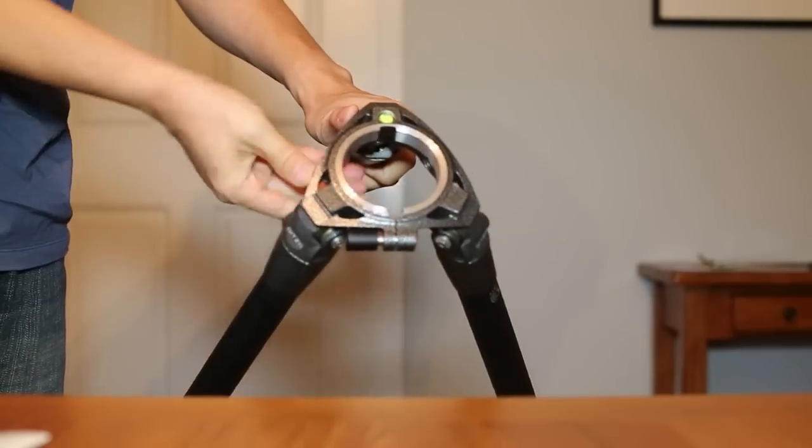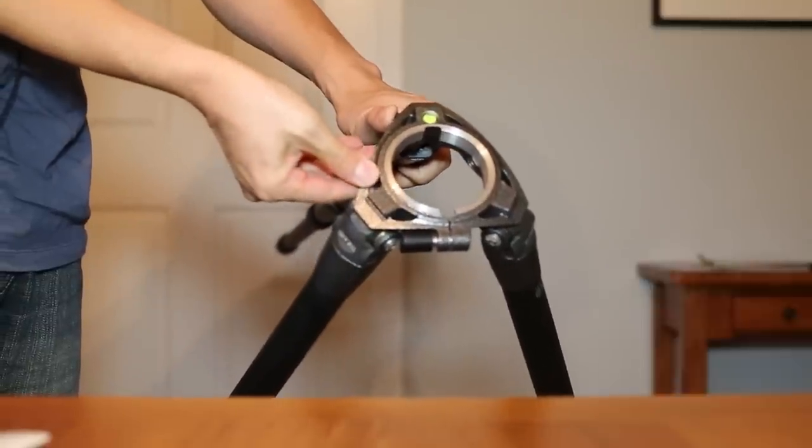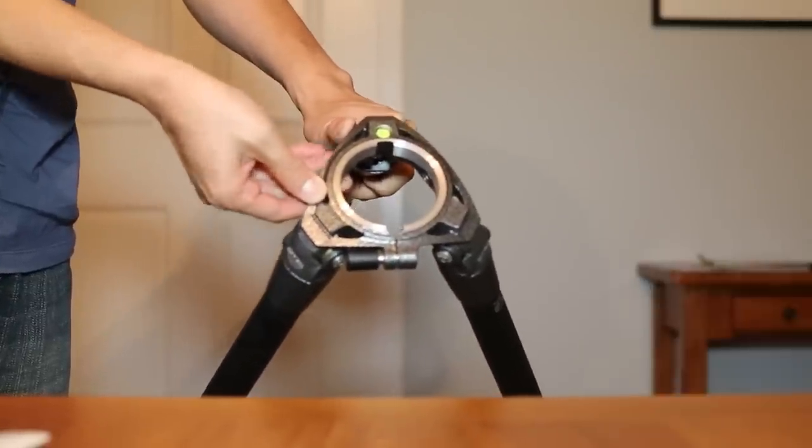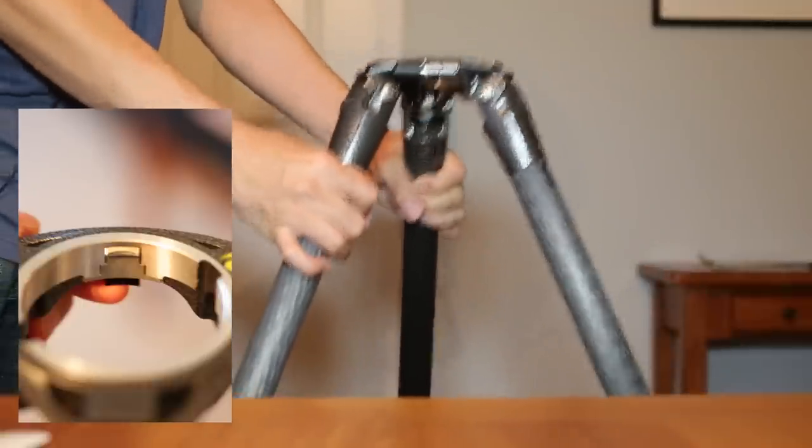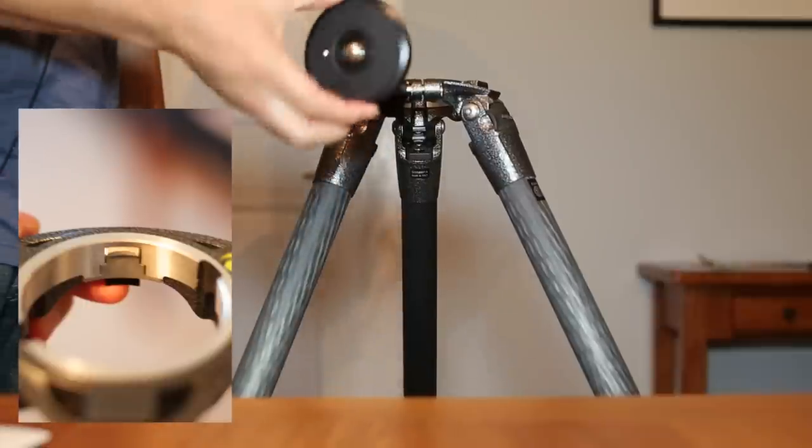And the little indent button, there's a little indent right here when I push the button. It may be hard to see in this video. So both of those things need to actually be loose in order to be able to take this top plate out.